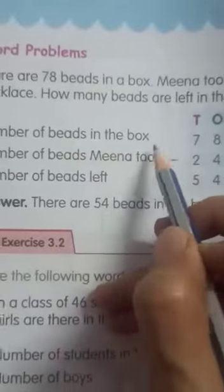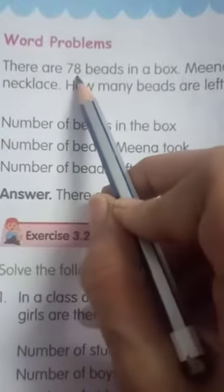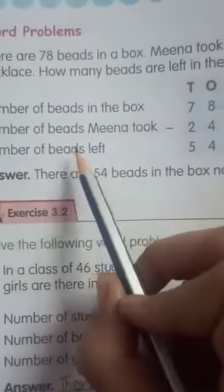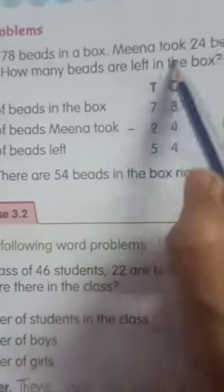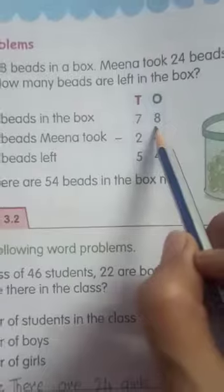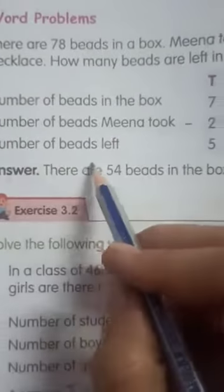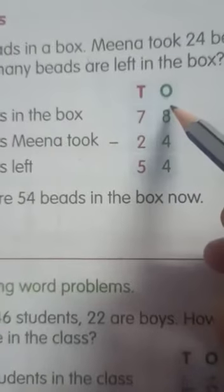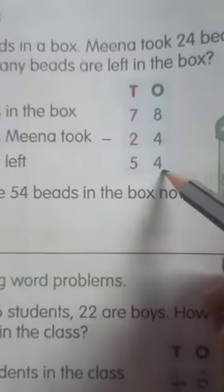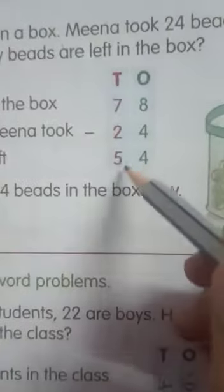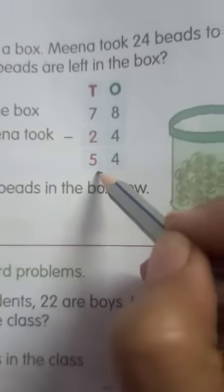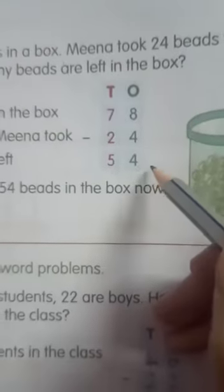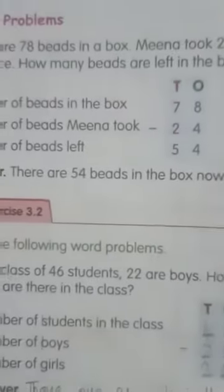Number of beads in the box, how many beads were there? 78 beads. And number of beads Mina took, how many beads Mina took? 24. Now, number of beads left. Let's subtract 24 from 78. 8 minus 4 is 4, and 7 minus 2 is 5. So there are 54 beads in the box now. Okay, this is the word problem.